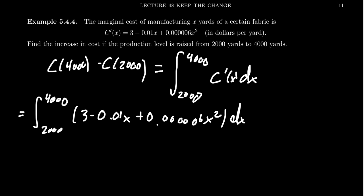Well, our antiderivative, even with all these zeros here, is basically the same as we would for any other polynomial. We get 3x minus 0.01x squared over 2 plus 0.00006x cubed over 3. And evaluate that from 2,000 to 4,000.